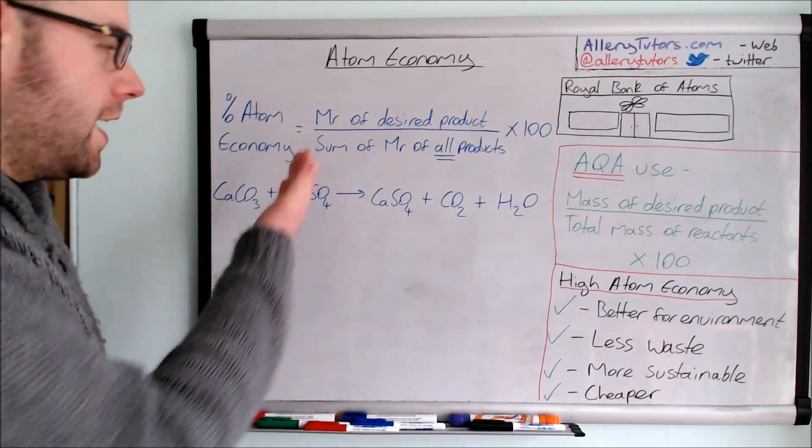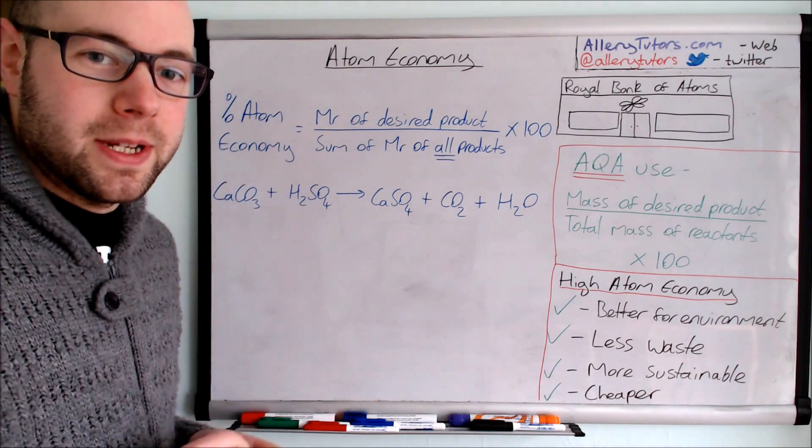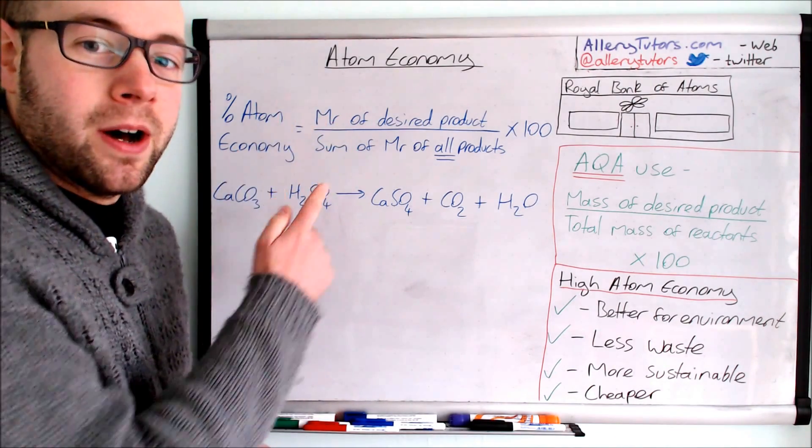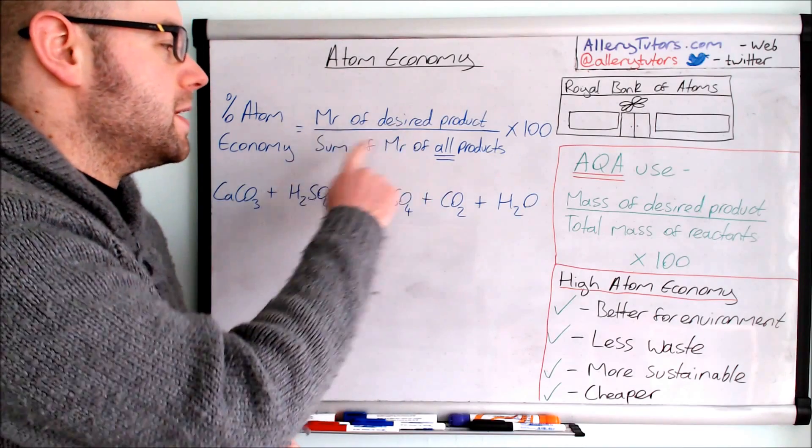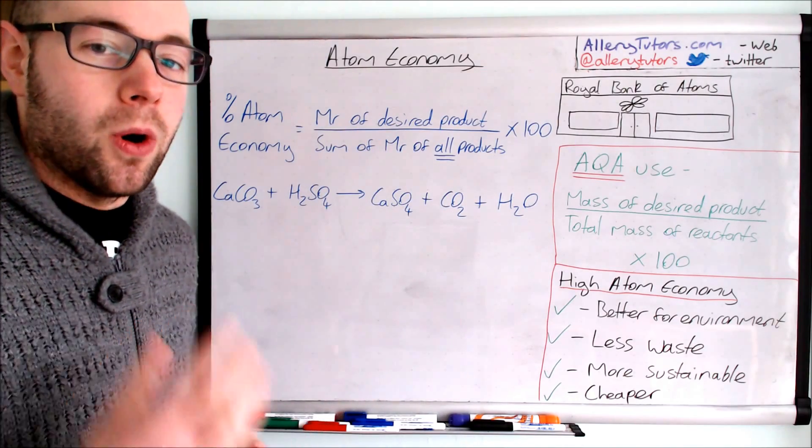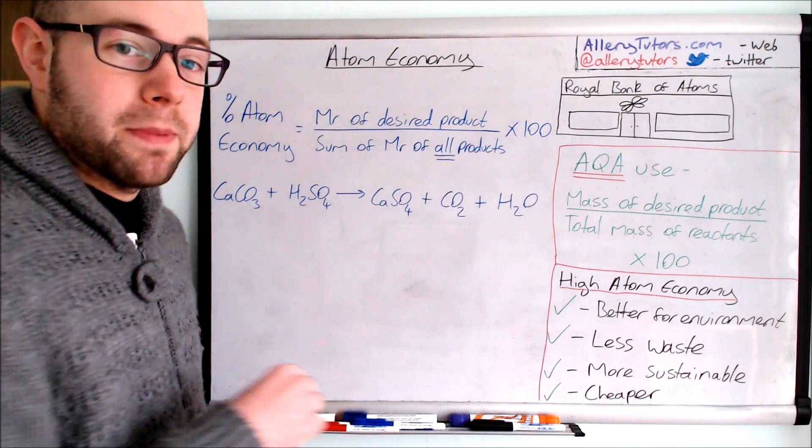So here's our equation. Now an atom economy is measured by the molecular mass or the MR of the desired product divided by the sum of the MR of all products multiplied by 100.